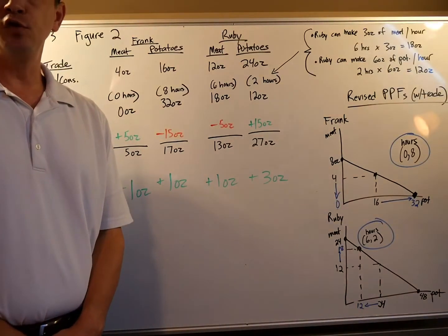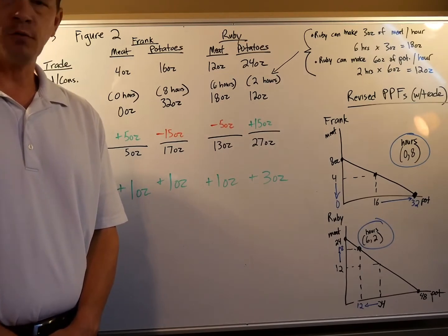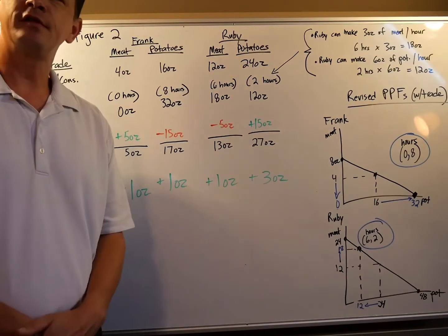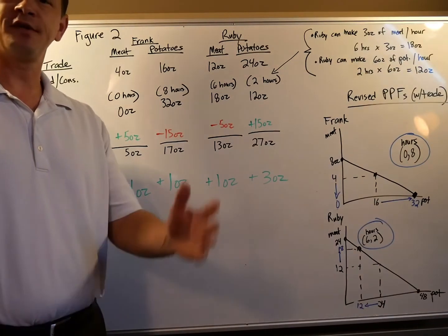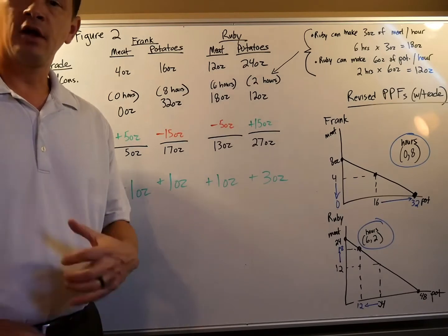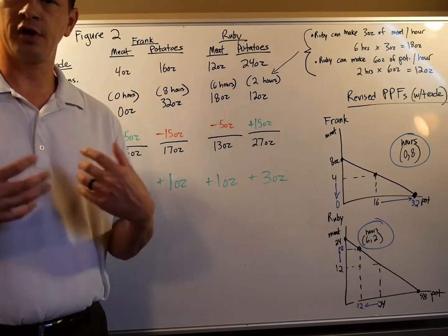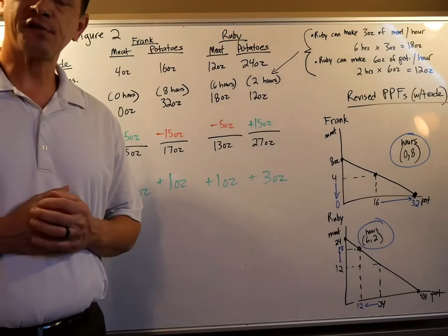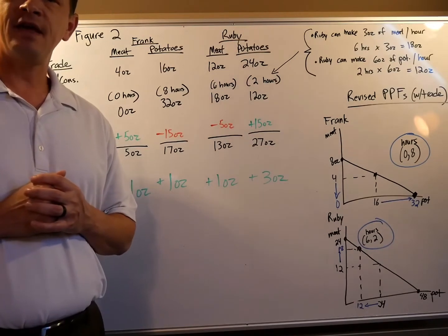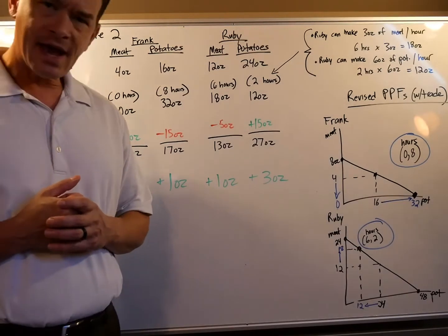Welcome back - this is video two for chapter three, interdependence and the gains from trade. We've been introduced to Frank and Ruby, who live in a pioneer prairie situation. They raise cattle for meat and plant potatoes, and the ounces they produce daily determines their standard of living. We left off video one with Ruby proposing to Frank that they could trade and be more productive.